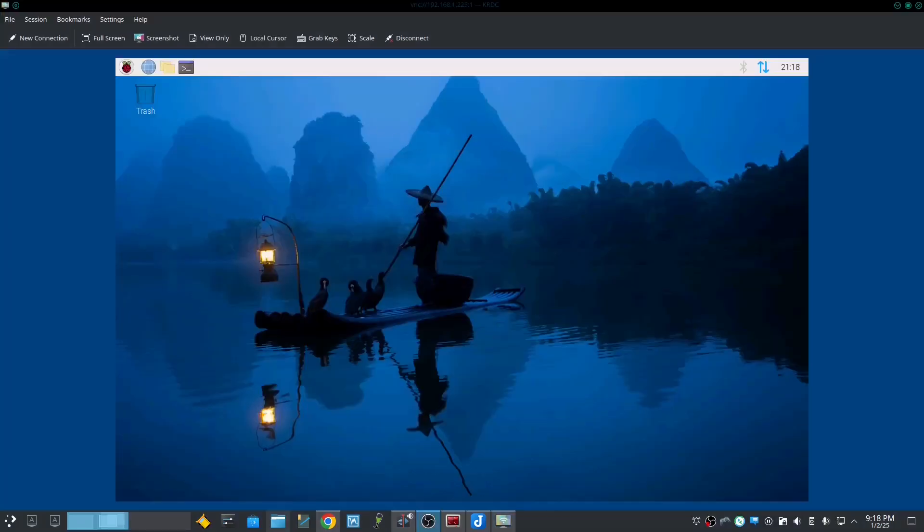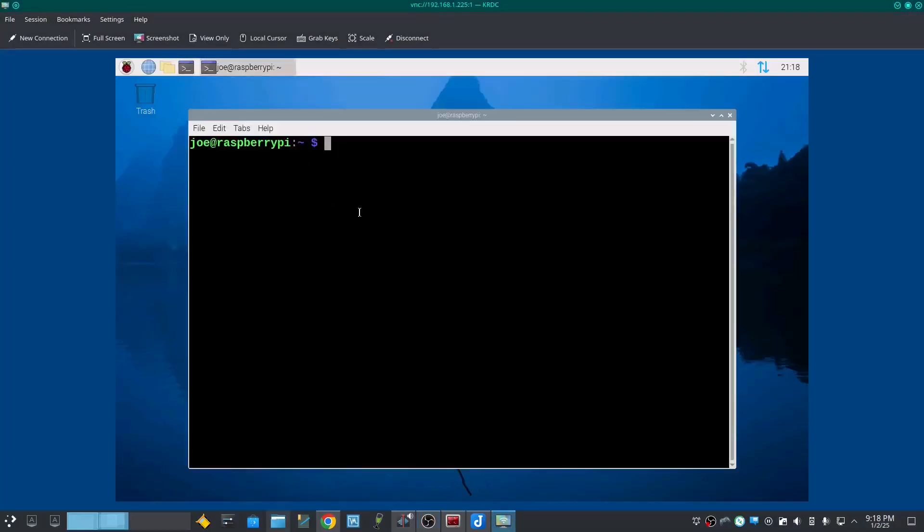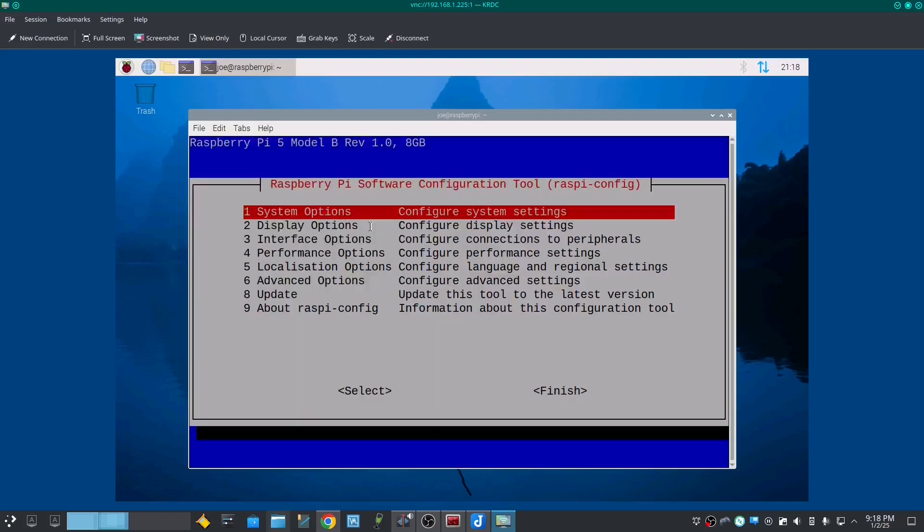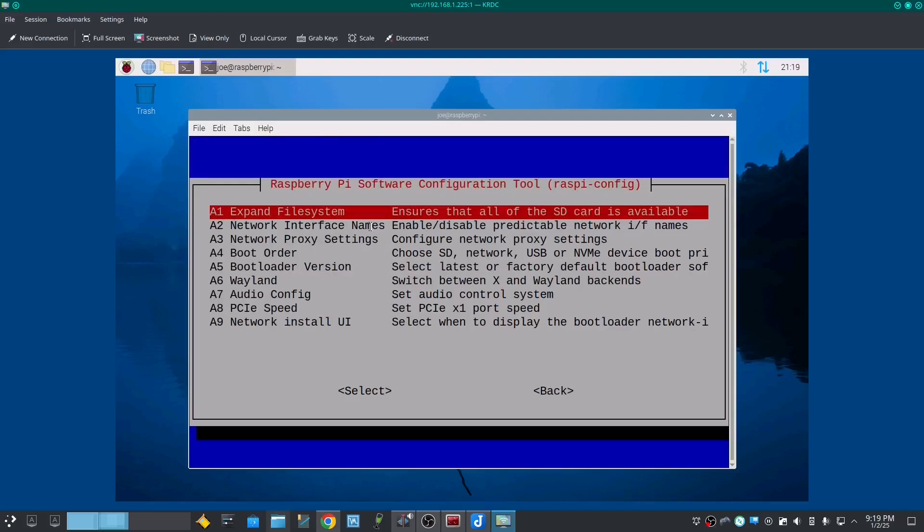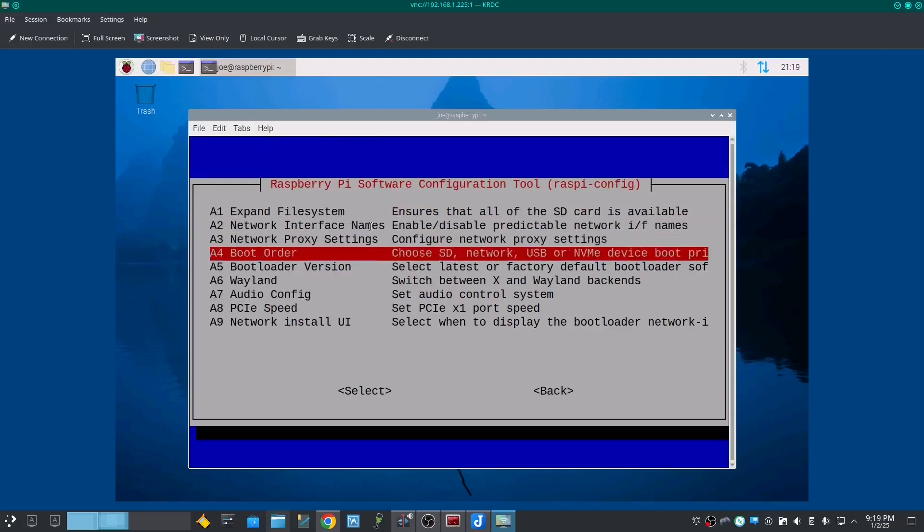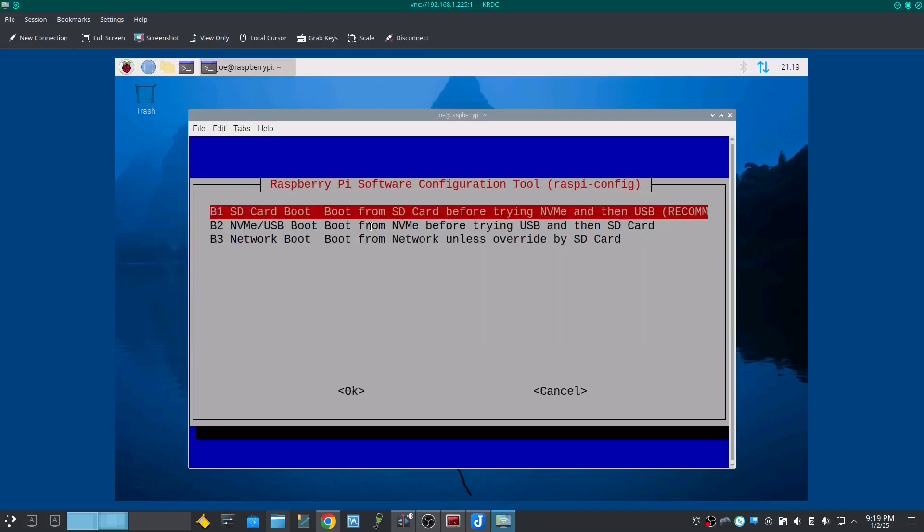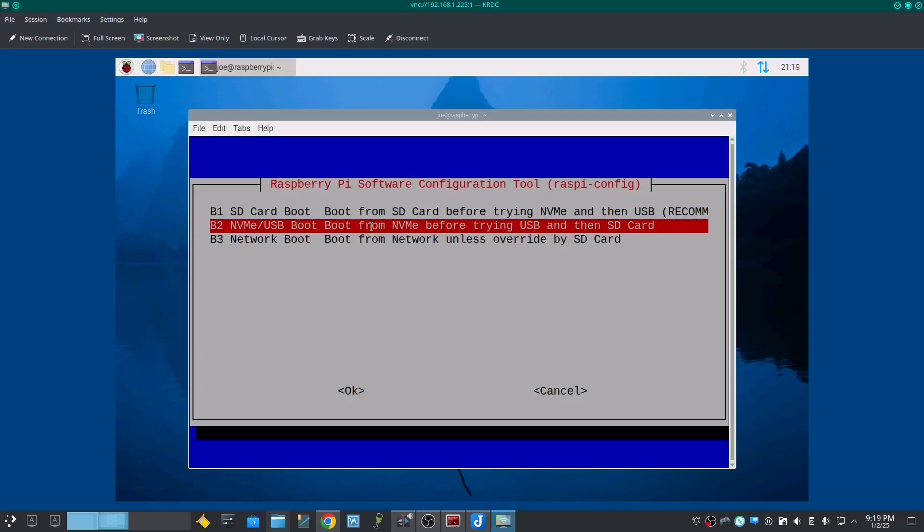When that's done, open a terminal and type sudo raspi-config. Then use the arrow key to go down to number six, Advanced Options. Hit enter. Then go down to A4 Boot Order. Press enter. Then choose B2 NVMe Boot. Then press enter.